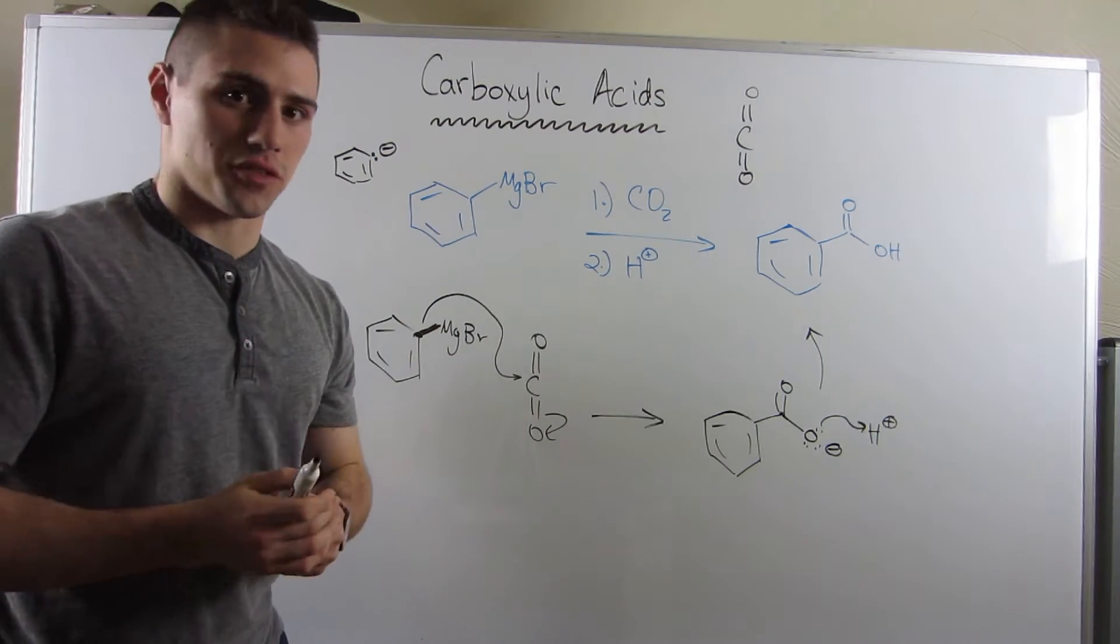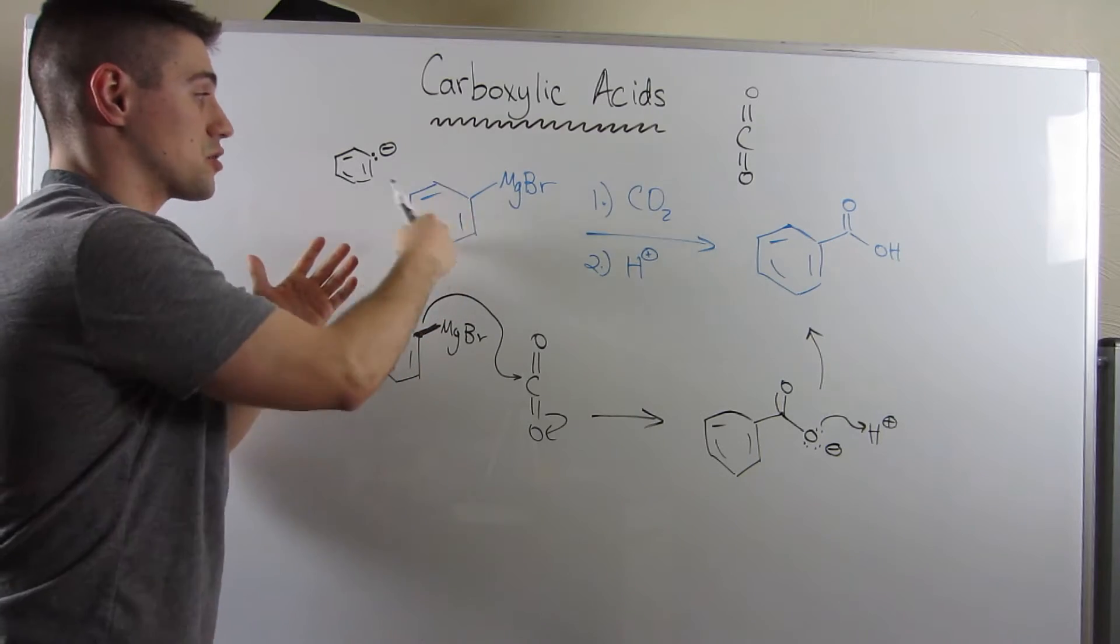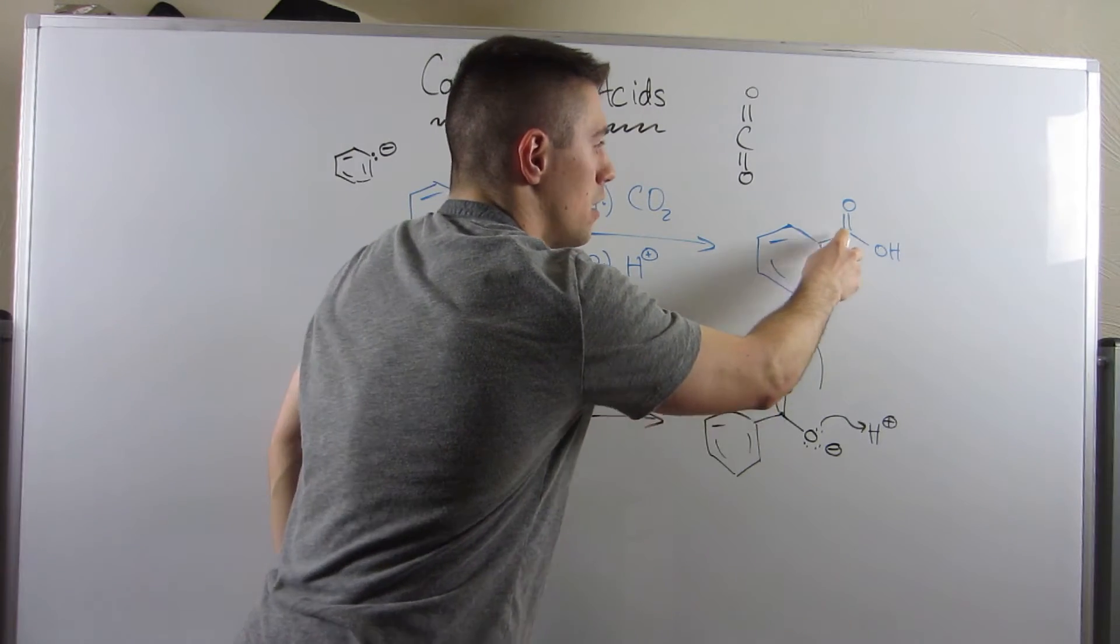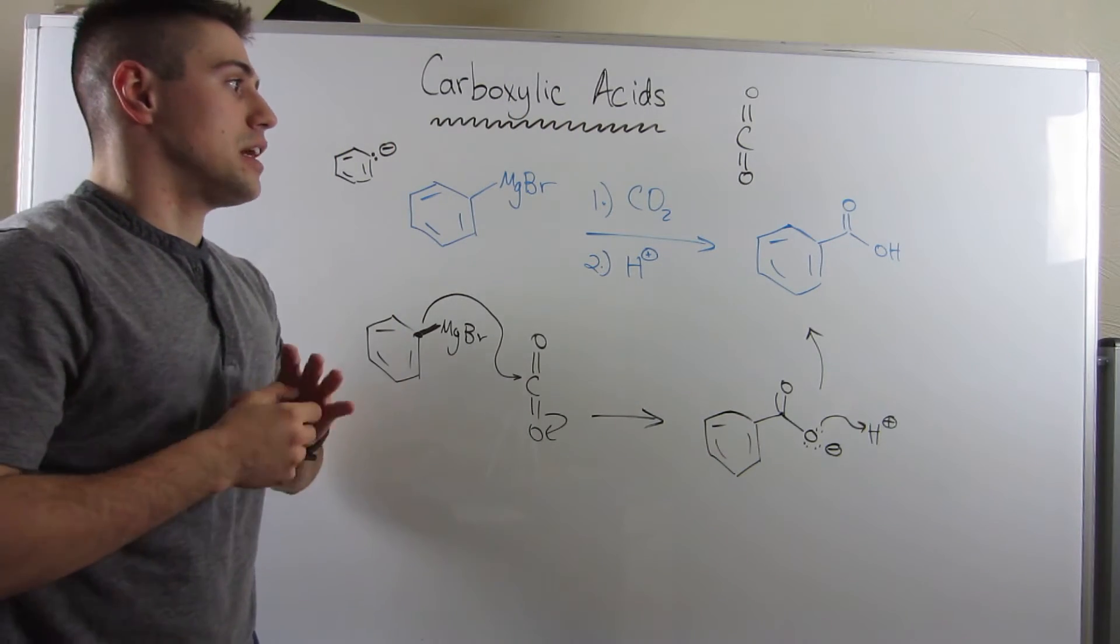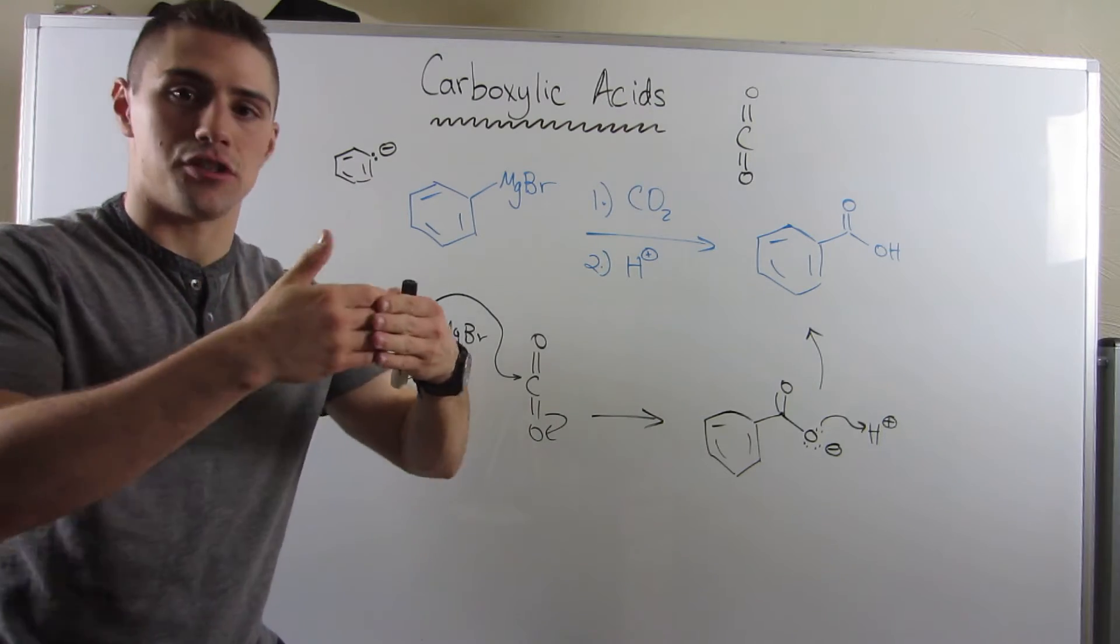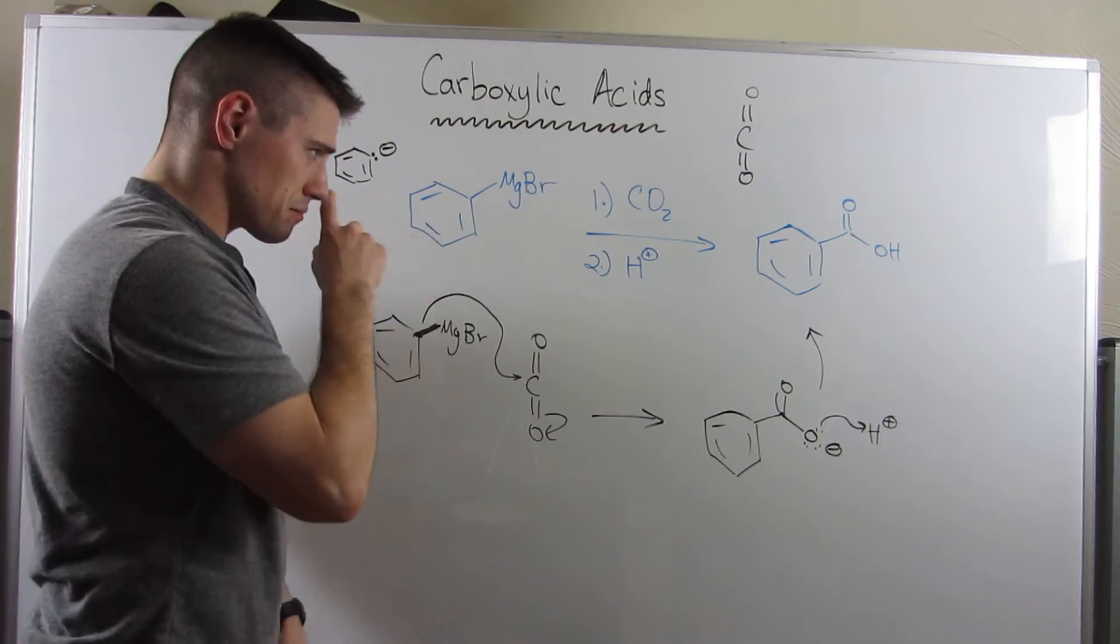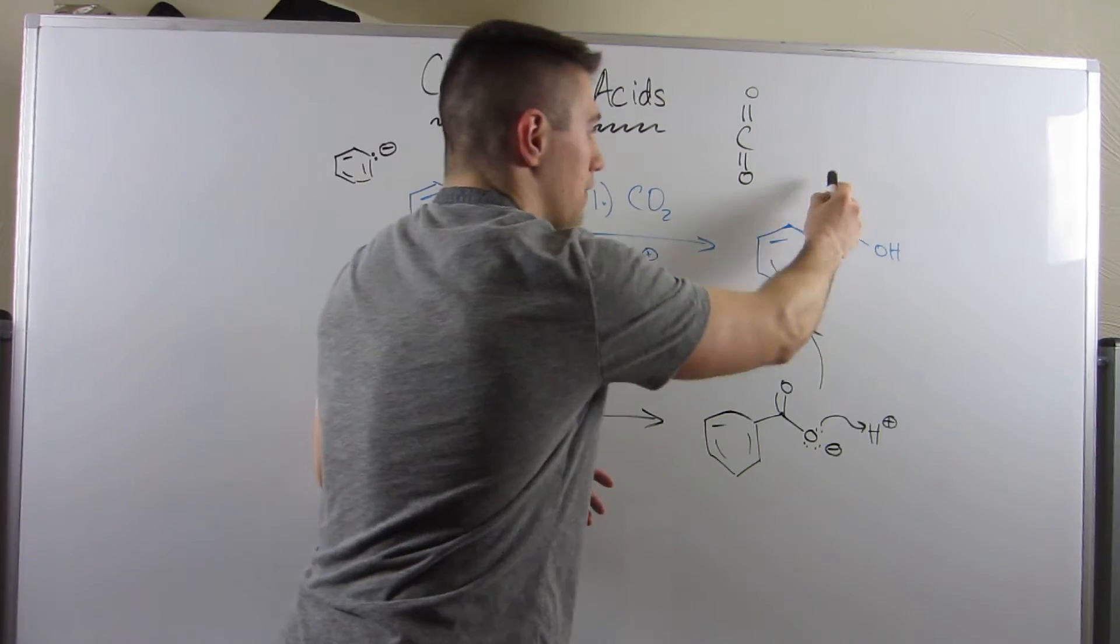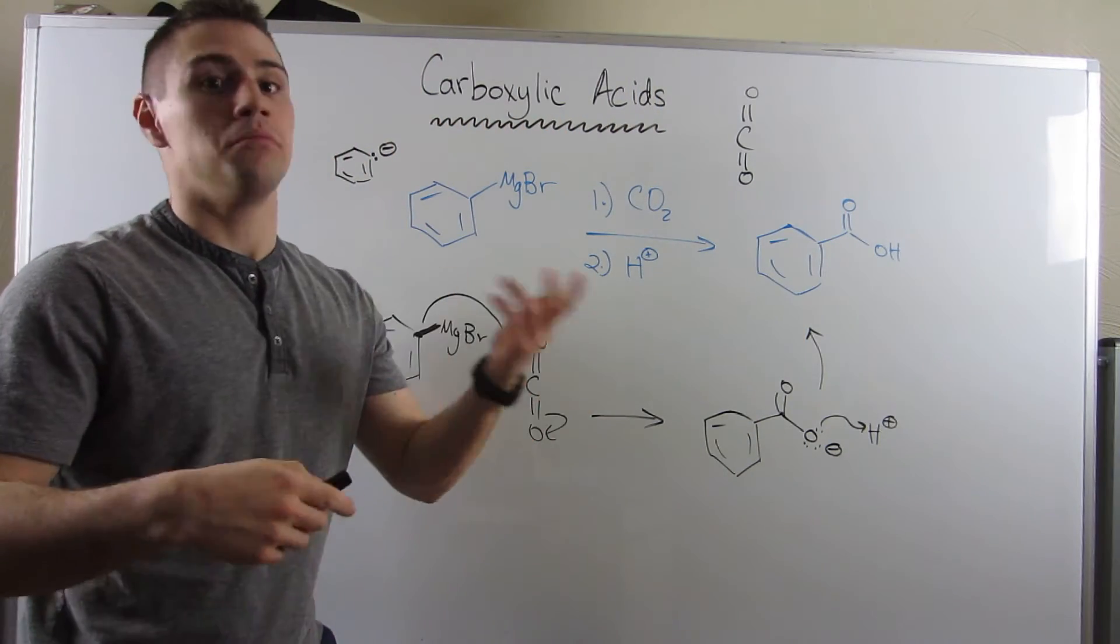And realize what this does for us. We took a six carbon benzene ring in this case. And what did we do? We extended the carbon chain by one. So if for any reason you were stuck in a synthesis problem where at some point you need to extend your chain by one carbon, you can attack CO2 with a Grignard. And then you have this carboxylic acid functional group on the end. And if you need to alter it, you can go ahead and do that.